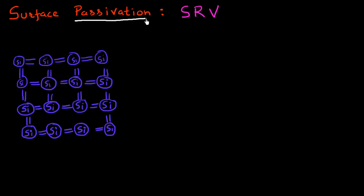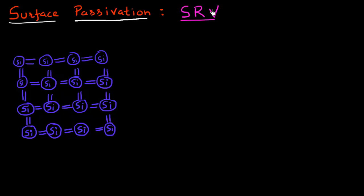Passivation of the solar cell surface is one of the most important topics as far as efficiencies of these solar cells are concerned. In this video I want to introduce why we require this surface passivation, and introduce the new term surface recombination velocity, and how that is used as a measure to find out how good the surface passivation is.